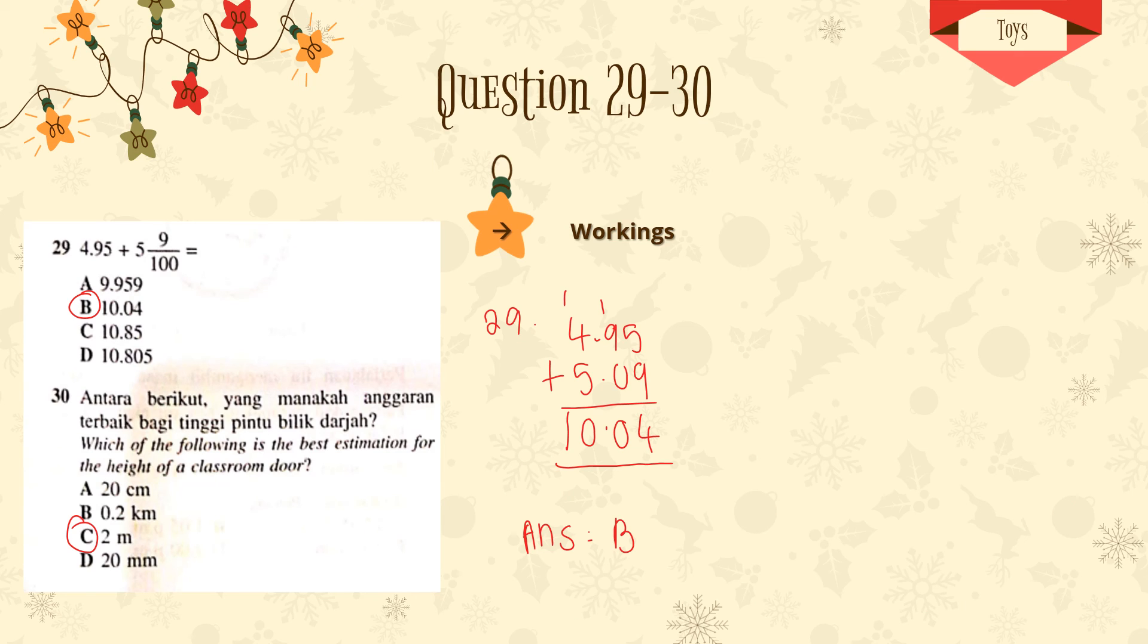Question 29 to 30. Alright. Question 29. 4.95 plus 5 and 9/100. So 4.95 is this. And how do we change this fraction to a decimal? So 5, whole number, we can just write 5 there. Then let's put decimal point. Since 100 has 2 zeros, we put 2 spaces here. And then 9. Then we put 0, 9. So we get this. So now 4.95 plus 5.09 will get 10.04. So the answer is D, 10.04.